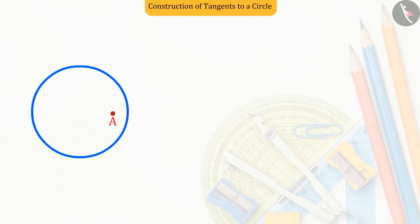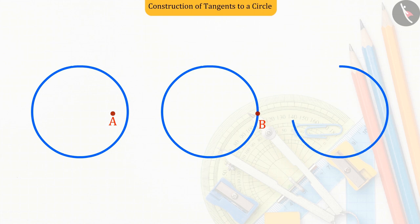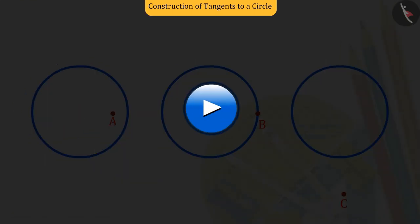Can you tell what will be the number of tangent lines drawn from the point to the circle in each case? To try yourself, pause the video and then match your answer.